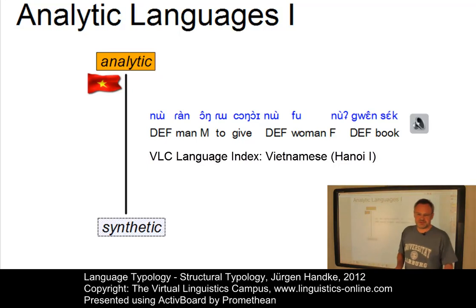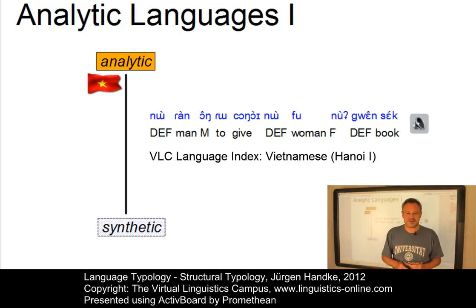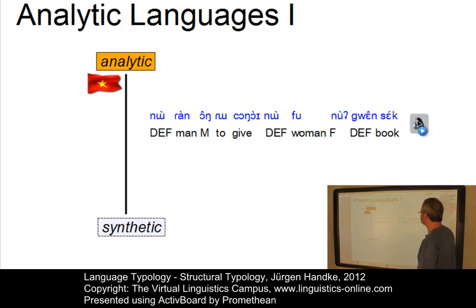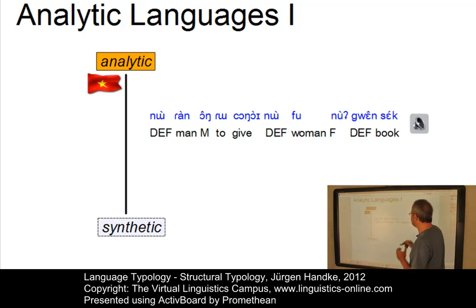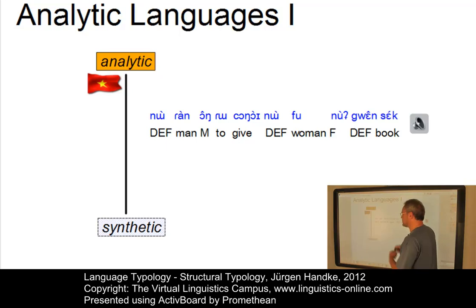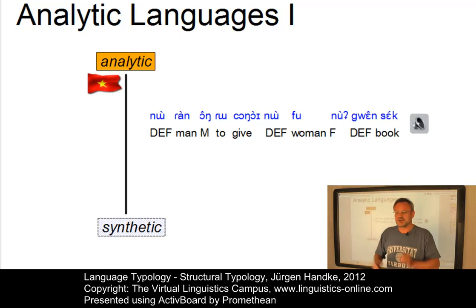Here is a sentence in Vietnamese — in fact, it's the sentence most of you know from the VLC Language Index: 'The man gives the woman the book.' The Vietnamese equivalent is: 'Người đàn ông đưa cho người phụ nữ quyển sách.' As you can see quite clearly, each morph or word corresponds to one translation or one grammatical function — a clear one-to-one relationship between words and morphemes.